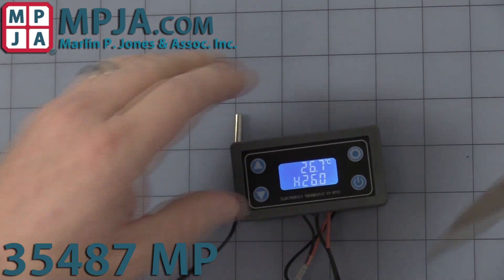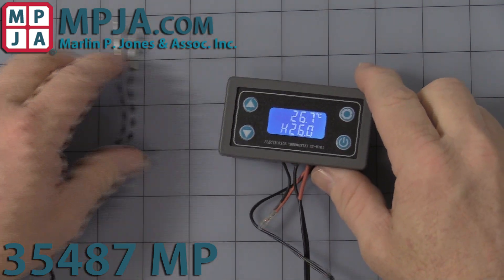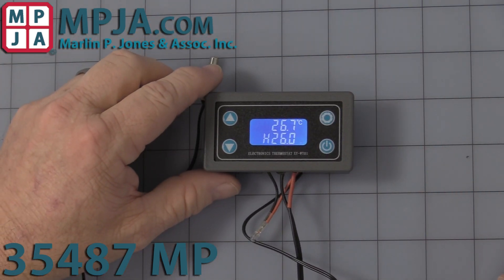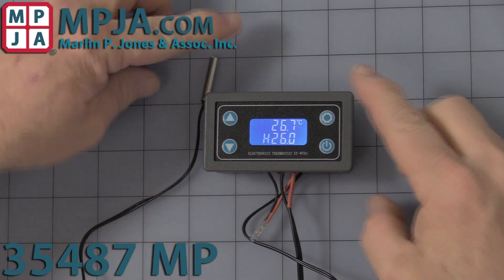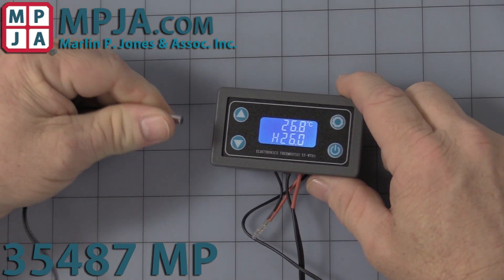First thing you see is the nice backlit display. The top is the actual ambient air temperature in Celsius. Here I'll warm up the thermostat just so you can see it moving.